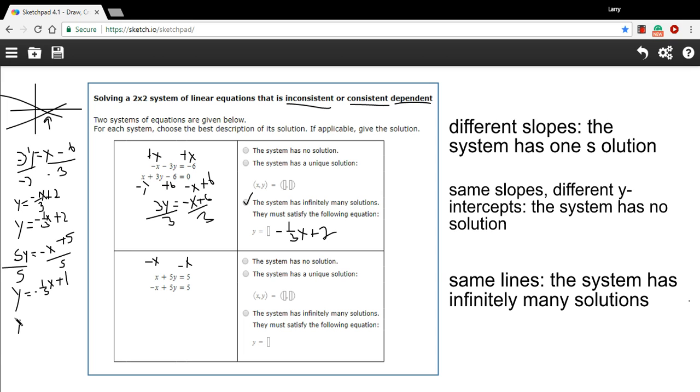And so when you solve this one for y, I'll let you try that on your own. You're going to get an almost identical equation, except the slope will have a different sign. It'll be a positive one-fifth x plus 1.